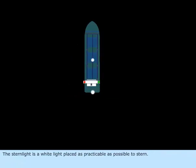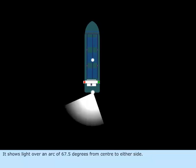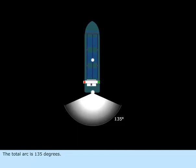The stern light is a white light placed as near as practicable to the stern. It shows light over an arc of 67.5 degrees from center to either side. The total arc is 135 degrees.